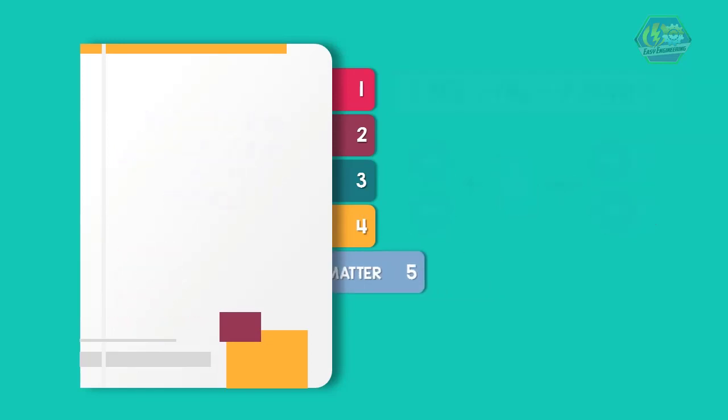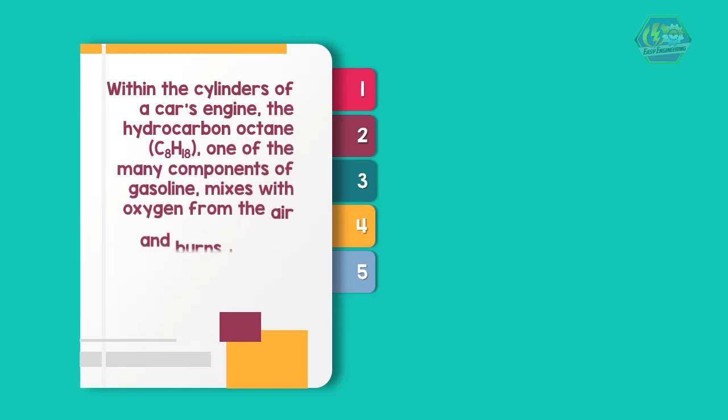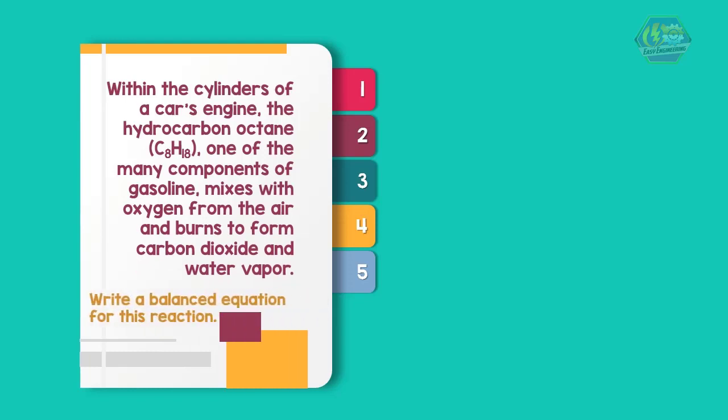Now let's try another problem. Within the cylinders of a car's engine, the hydrocarbon octane (C8H18), one of the many components of gasoline, mixes with oxygen from the air and burns to form carbon dioxide and water vapor. Write a balanced equation for this reaction. So step 1: Translate the statement. We have C8H18 + O2 → CO2 + H2O.